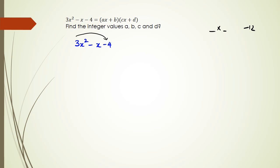I'm looking for two numbers that multiply to negative 12 and add to negative 1, so in this case it is going to be negative 4 and 3. So I can then write down this as 3x² - 4x + 3x - 4. As you can see I've split that negative x as negative 4x and positive 3x.